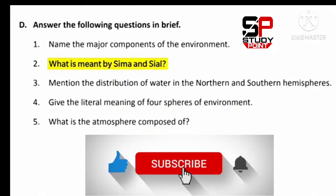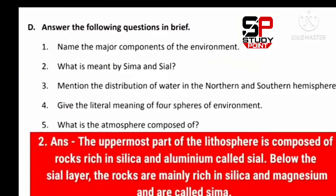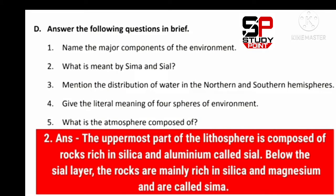Question number two: What is meant by SIMA and SIAL? The answer is the uppermost part of the lithosphere is composed of rocks rich in silica and aluminum, called SIAL. Below the SIAL layer, the rocks are mainly rich in silica and magnesium and are called SIMA.